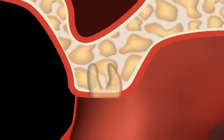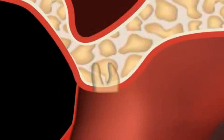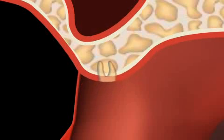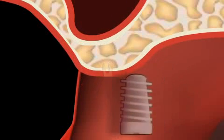First, the alveolar ridge decreases in width, and then it also starts to regress in terms of height. This is called alveolar ridge atrophy.